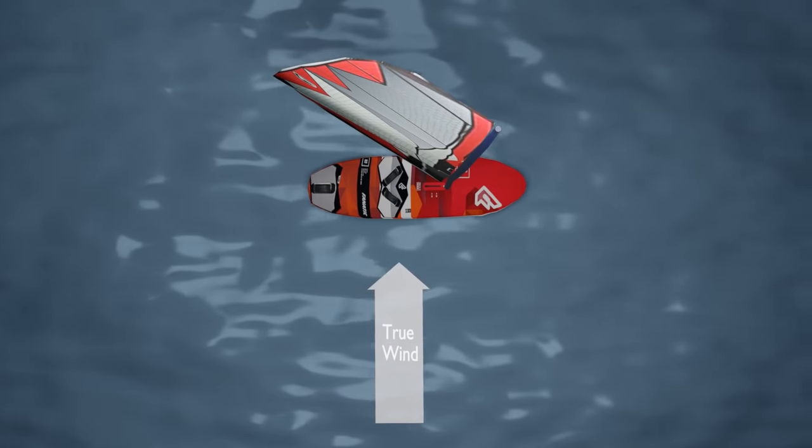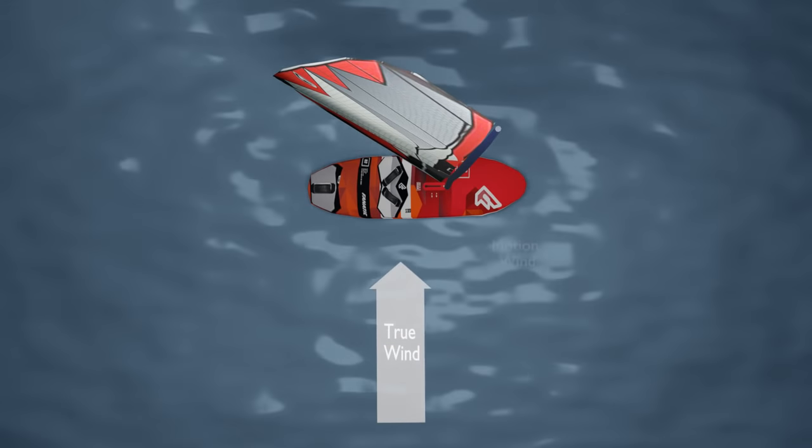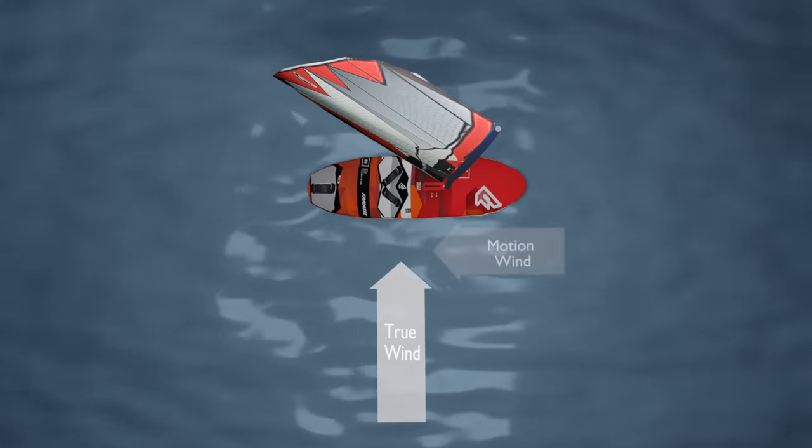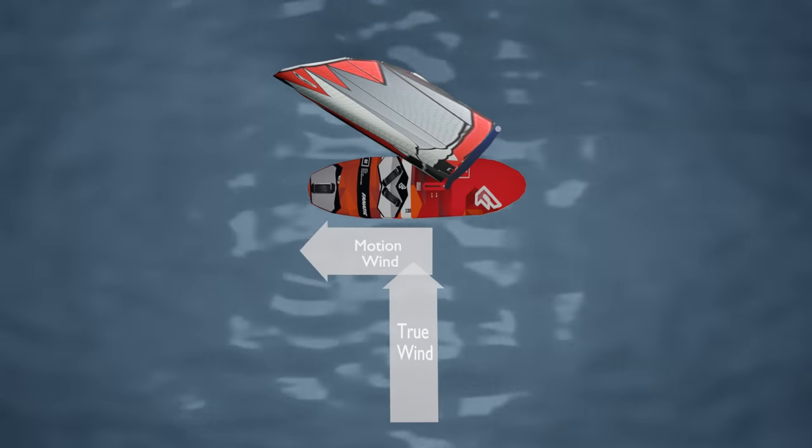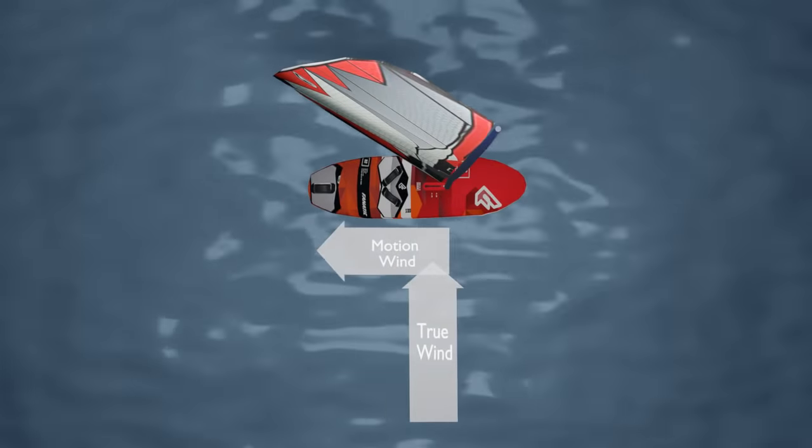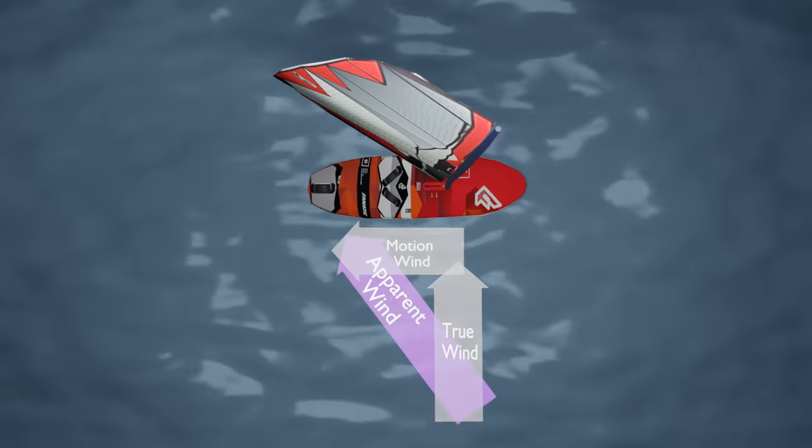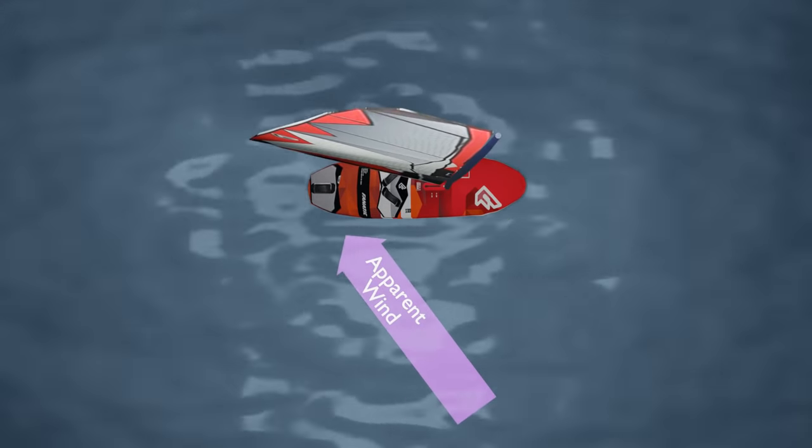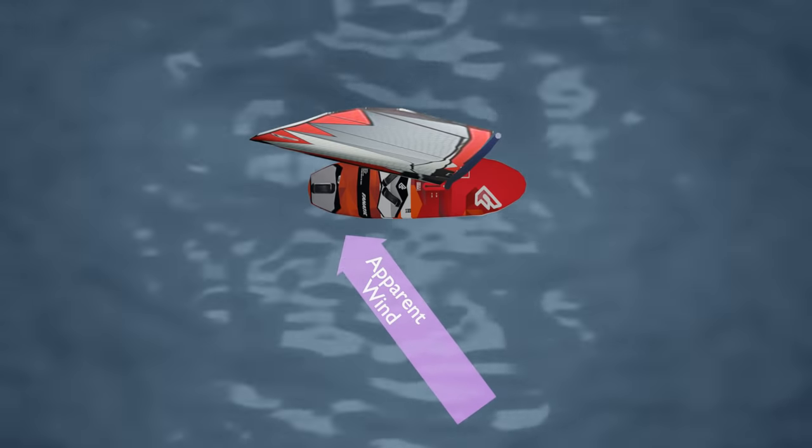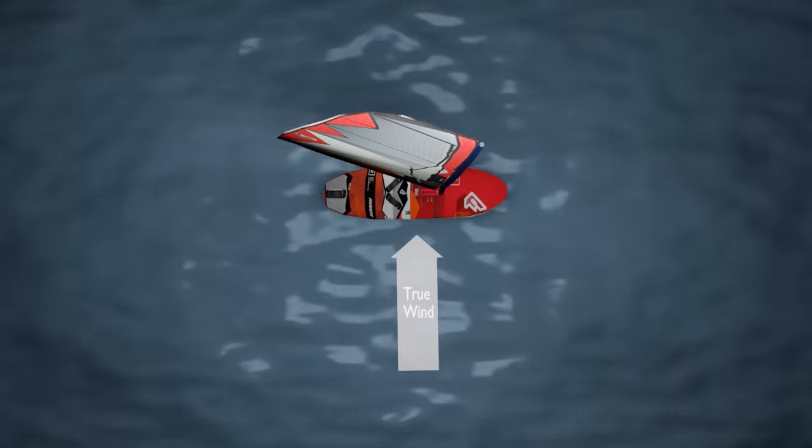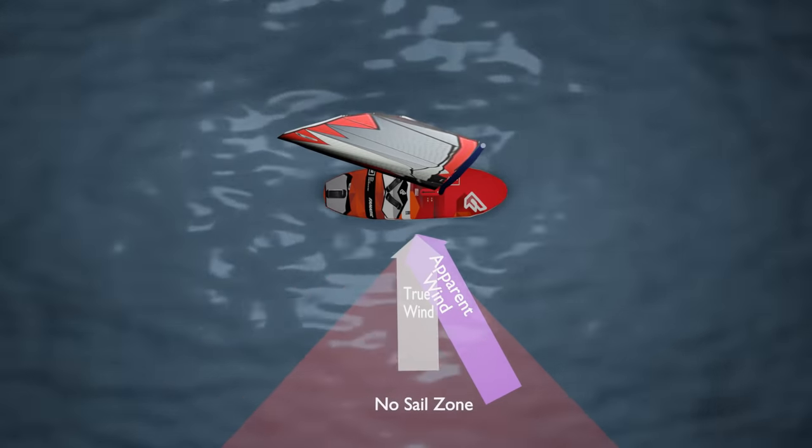So how can you sail faster than the wind? As the wind blows and you begin to accelerate, a second wind is formed from the motion of the board moving forward, just like when you stick your head out the window of a car. These two winds collectively form another wind called the apparent wind, which blows at a combined angle of both the other two winds. This allows you to pull in the sail again for the most power from the wind.